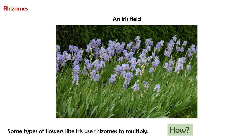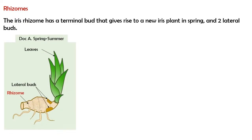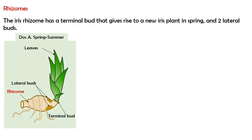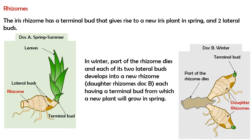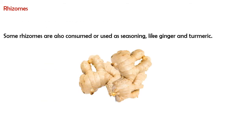How? The iris rhizome has a terminal bud that gives rise to a new iris plant in spring and two lateral buds. In winter, part of the rhizome dies and each of its two lateral buds develops into a new rhizome, called a daughter rhizome, each having a terminal bud from which a new plant will grow in spring. Some rhizomes are also consumed or used as seasoning, like ginger and turmeric.